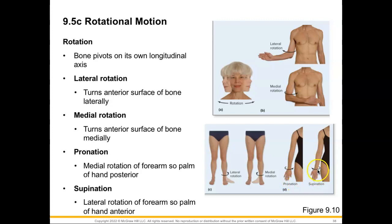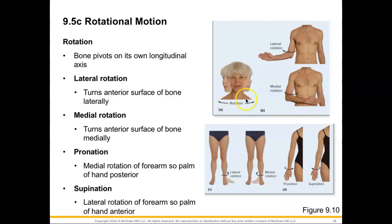Supination is like holding a bowl of soup — flexing at the elbow with the palm facing up represents a lateral rotation of the forearm so that the palm faces anteriorly. The opposite, turning so the palm faces posteriorly, is a medial or inward rotation called pronation. Rotating the head to look side to side is simply called rotation.